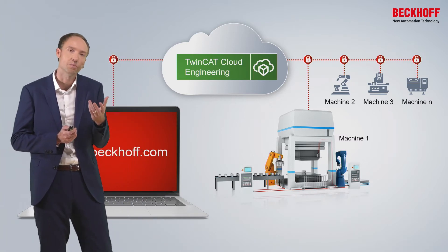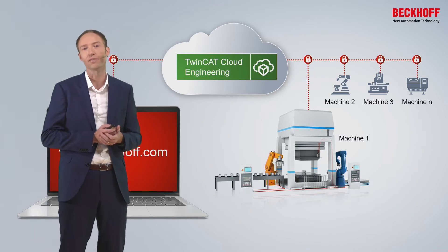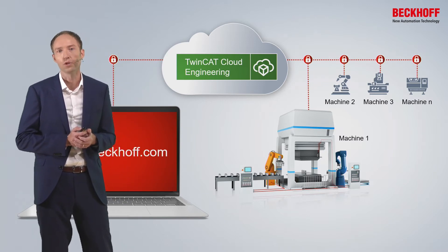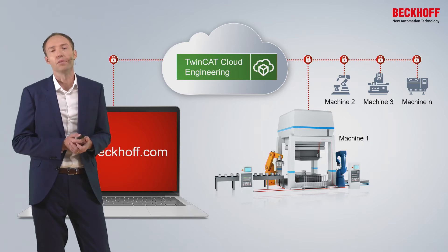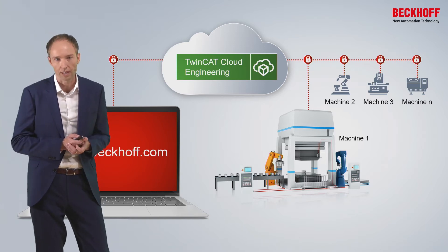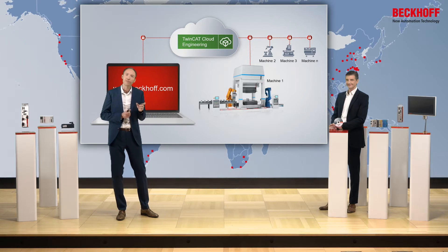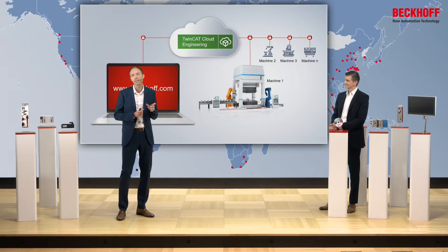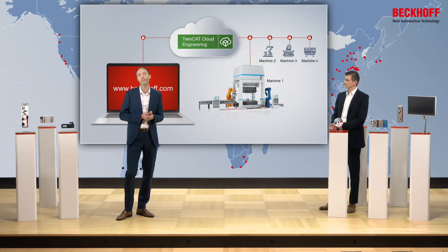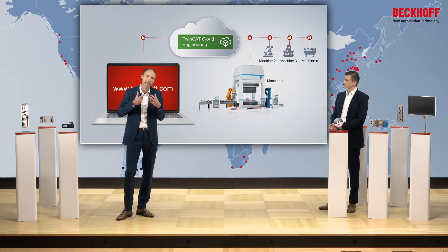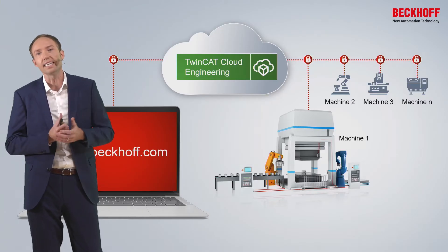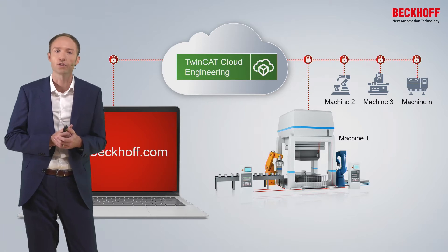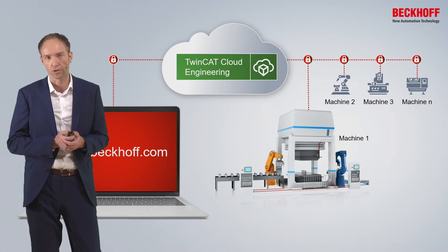What is a TwinCAT instance? Basically, an instance is a virtual machine image which you can provision, start, run, and operate, and which has pre-installed TwinCAT engineering tools inside. The real advantage is that those instances can also be connected to physical controller hardware in the field via a secure transport channel, allowing easy deployment of automation programs to the physical controller hardware.